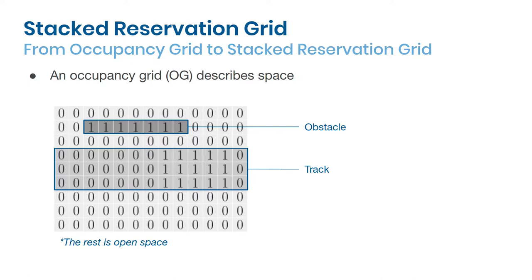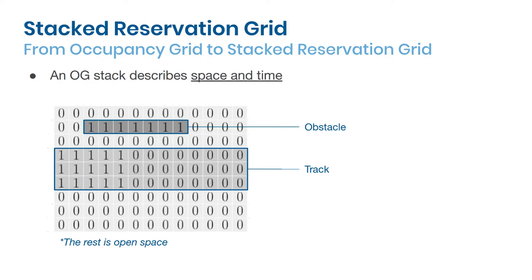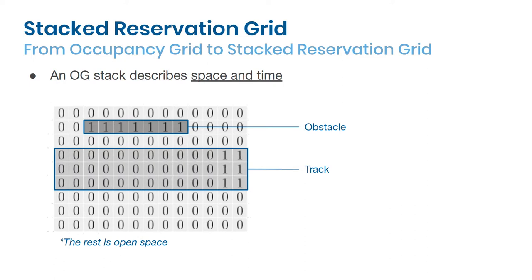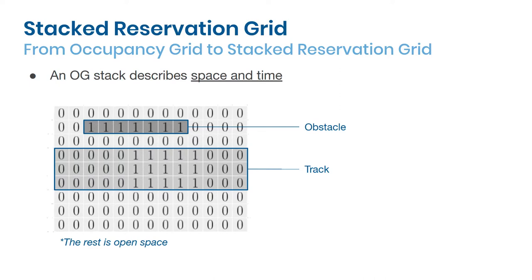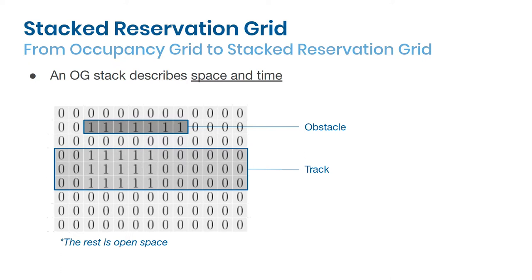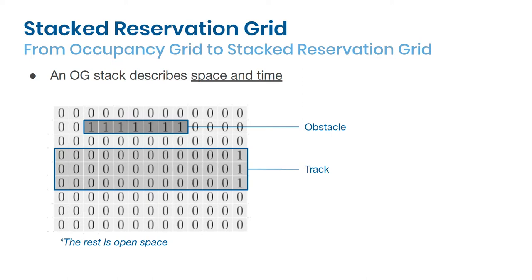To begin with, let me motivate the definition of SRG using Occupancy Grid. Occupancy Grid is a data structure that encodes spatial information on a 2D lattice. If one needs to describe a dynamic environment, he or she will need to use a stack of Occupancy Grids by first discretizing the time and then generating an Occupancy Grid at every time step. However, this method does not scale well with long time horizons as well as small time steps.